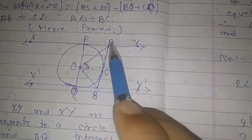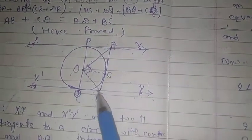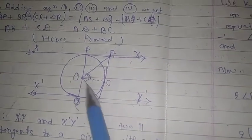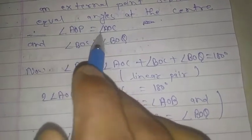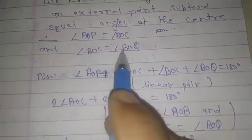This means that this angle and this angle are equal, and this angle and this angle are also equal. So angle AOB equals angle AOC, and angle BOQ equals angle BOC.